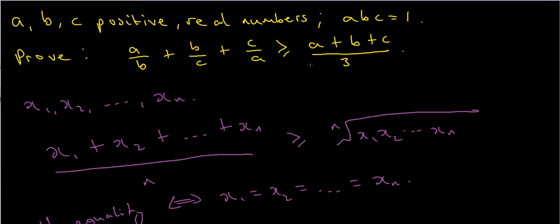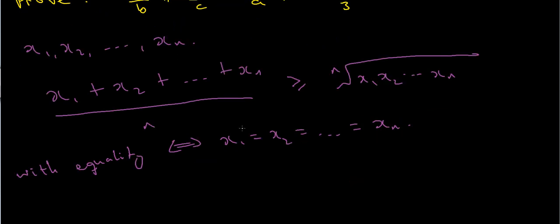I'm going to solve this using the AMGM inequality, or the arithmetic mean geometric mean inequality. In case you aren't familiar with this, I've written it out below. Suppose we have n different things — these could be numbers or arbitrary elements. The AMGM inequality says that the arithmetic mean, which is the sum of these elements divided by n, is always greater than or equal to the geometric mean, which is the product of these things taken to the nth root. We have equality if and only if each of these elements is the same.